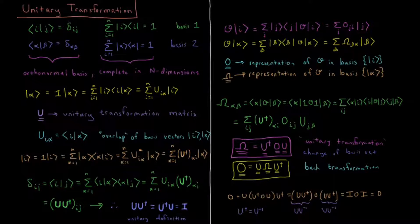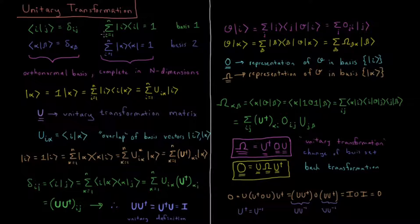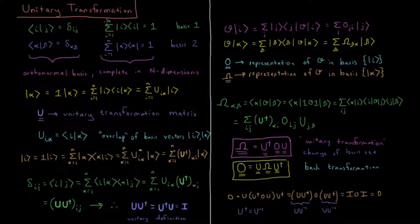This video will discuss unitary transformations and basis set transformations using matrices. Let's start off by defining two basis sets. We have basis set I, or IJ, where these are orthonormal basis vectors. Their overlap with themselves is 1 if I and J are the same, and 0 if they're different. They are also complete — the sum from I equals 1 to N of ket I times bra I equals 1. This means you can represent any vector in terms of all the basis vectors I in this N-dimensional set.